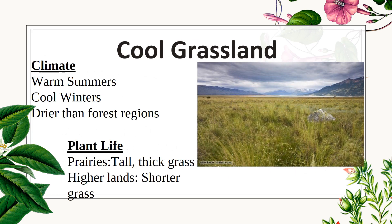Your cool grassland has a climate with warm summers but cool winters, and it's certainly drier than forest regions. Your plant life is like prairies — tall, thick grass — and some of the higher lands have even shorter grass.